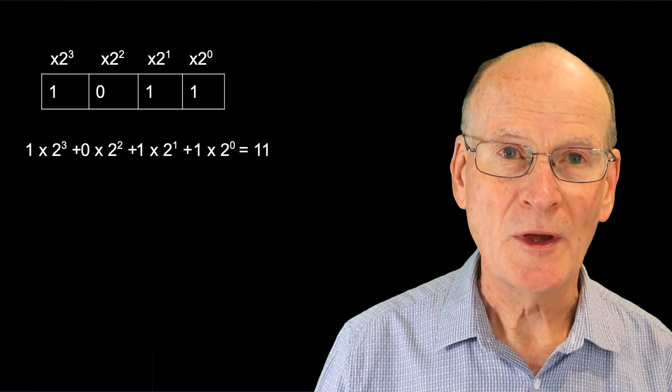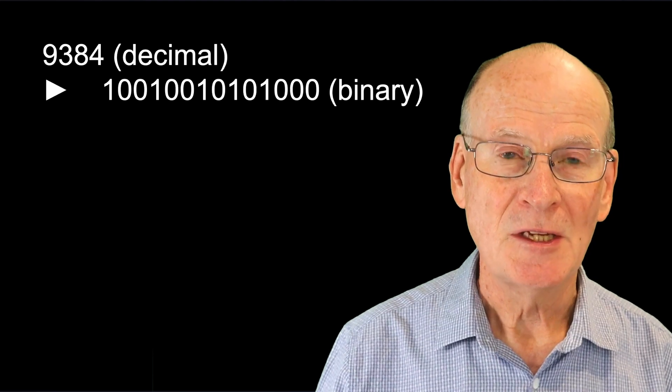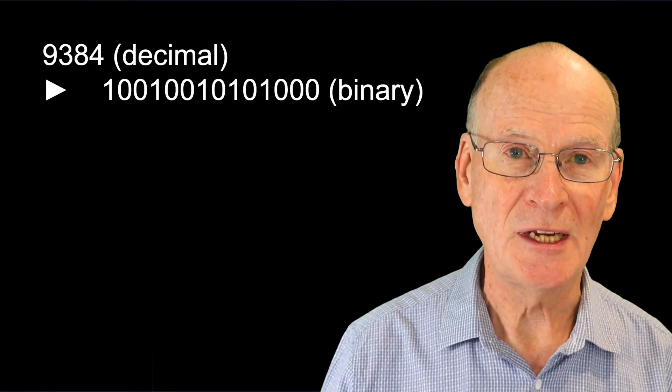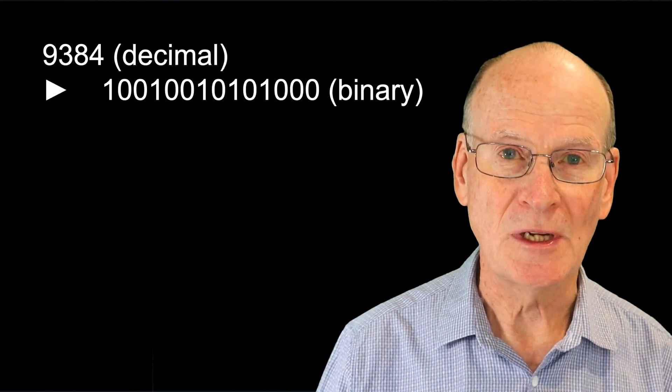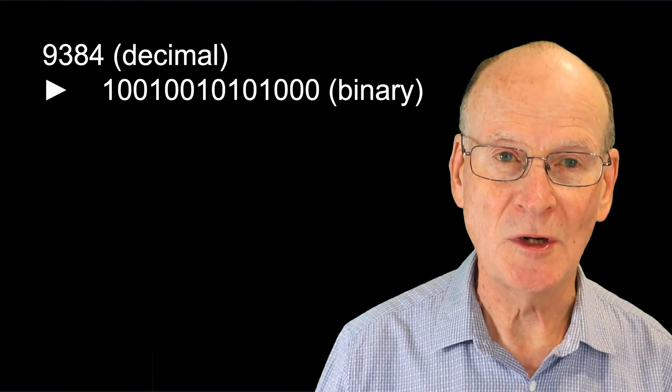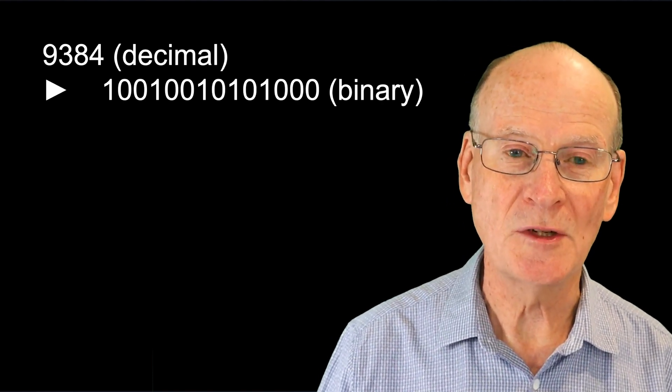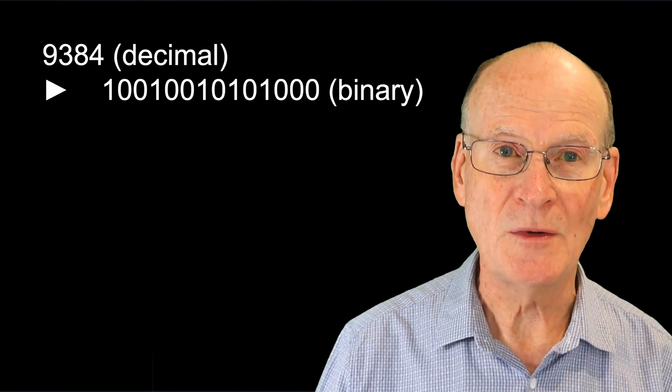So one problem though with binary numbers is that they take up a lot more space. If you look at the number, for example, 9384 in decimal, then we write it out like this in binary. It's a long string of 0s and 1s: 1001001010100. That's quite a mouthful. So binary numbers are very long.